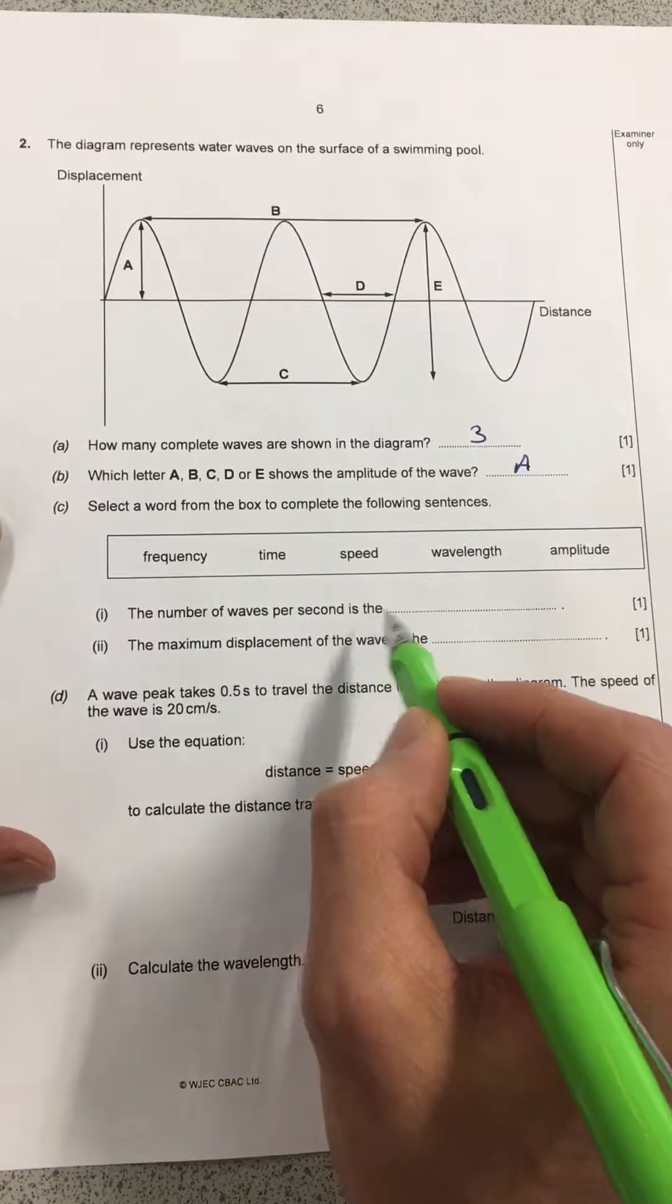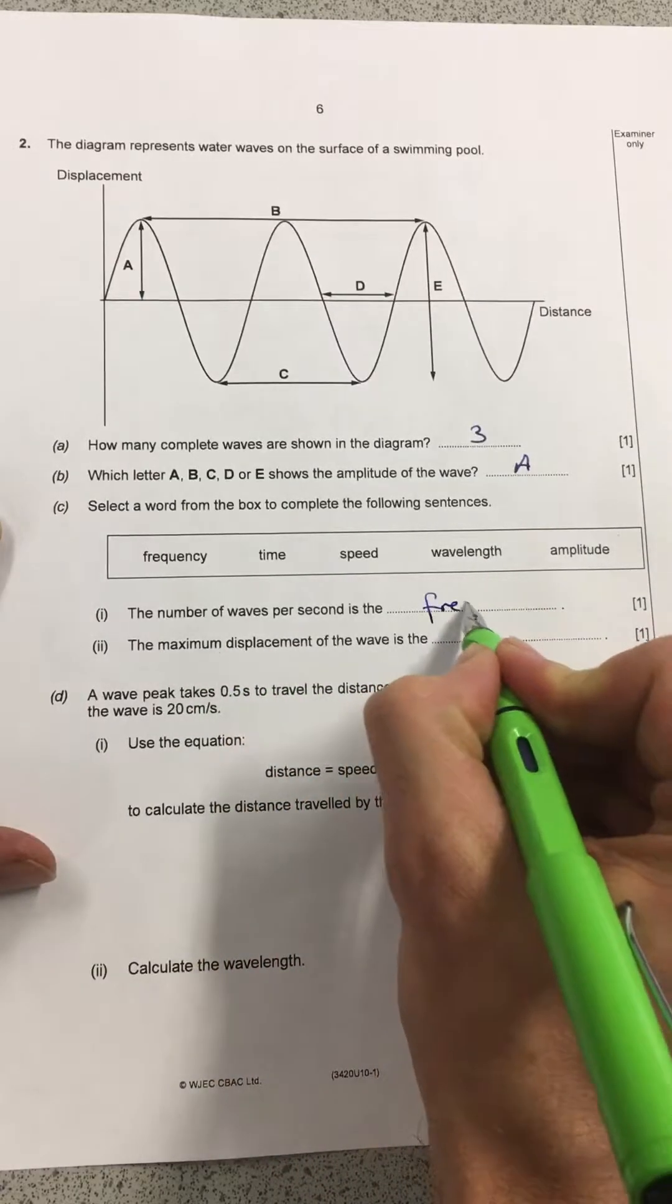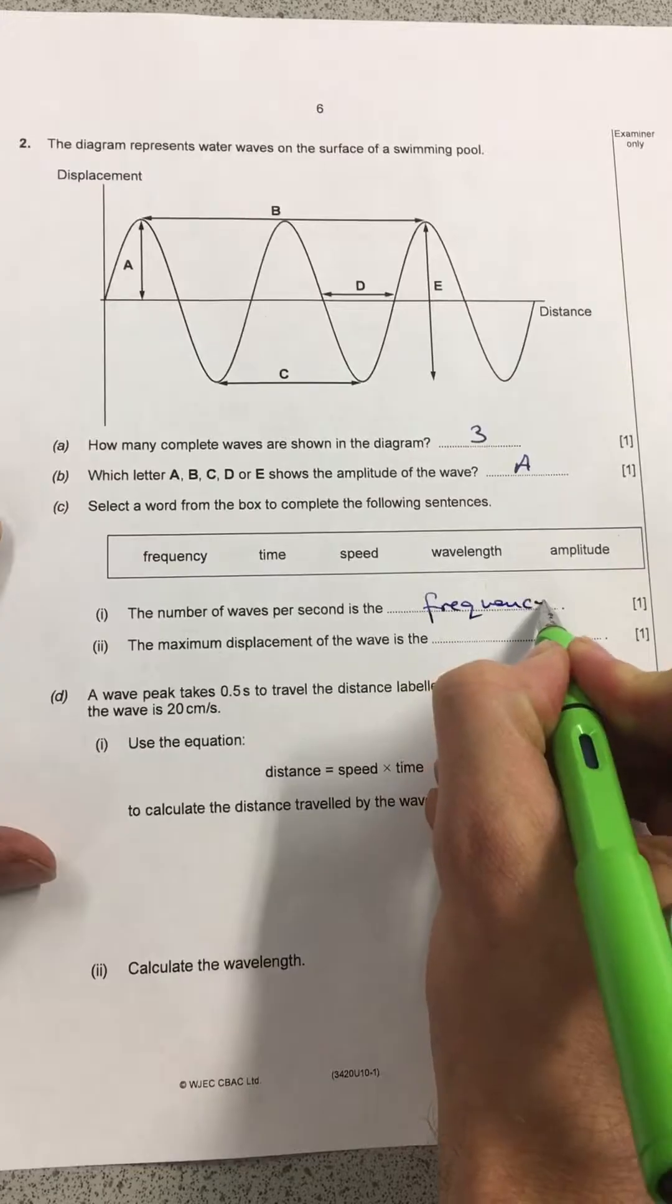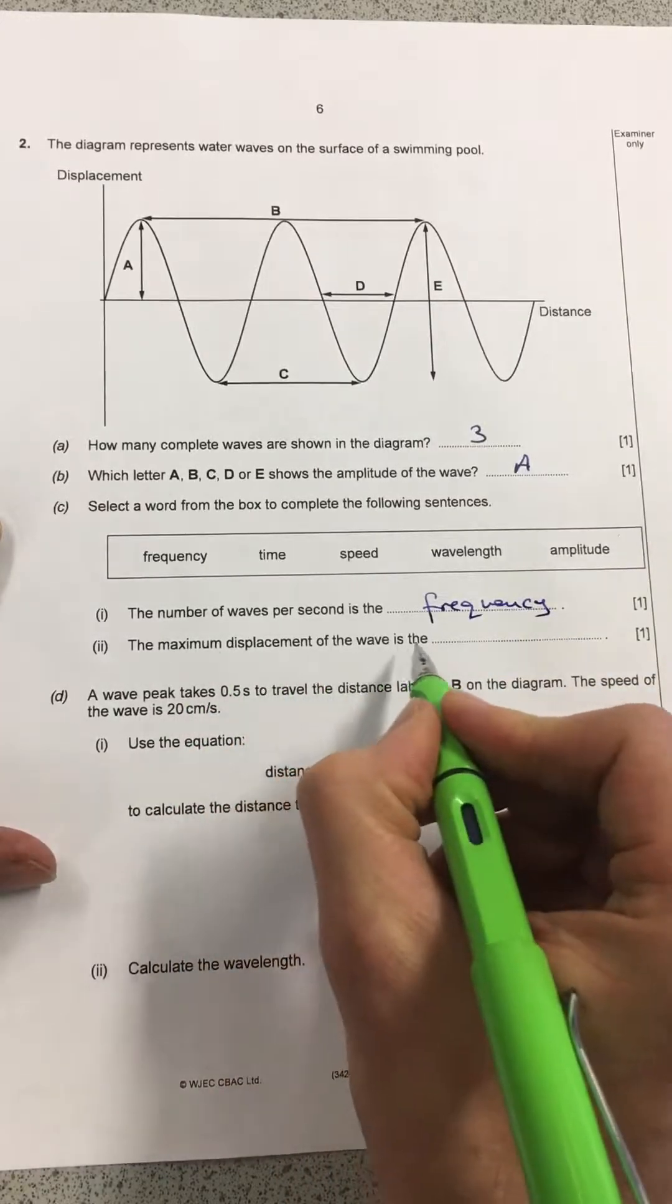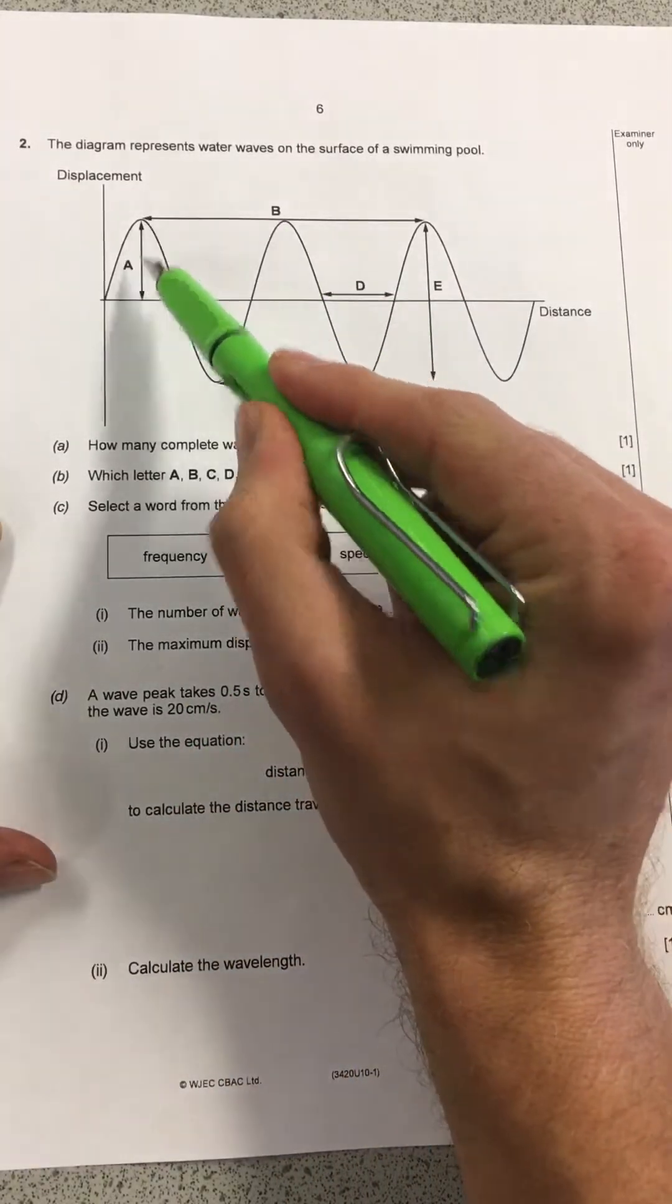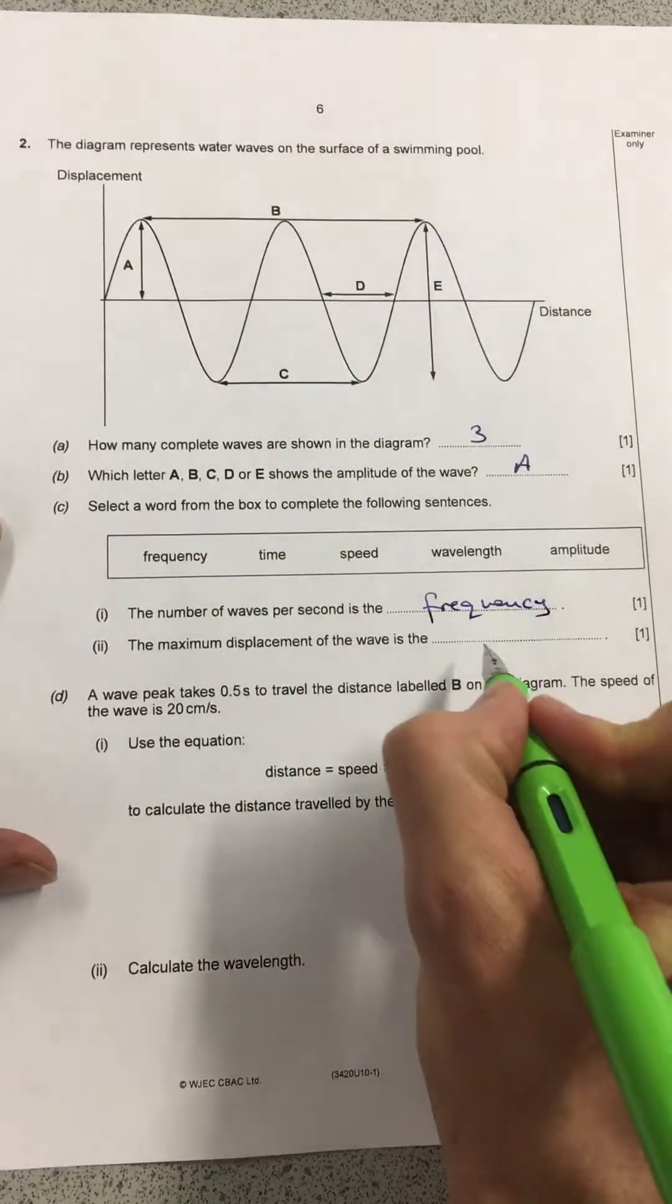So the number of waves per second is the frequency. And the maximum displacement of the wave is, going back up here, that one there again. So that's going to be amplitude.